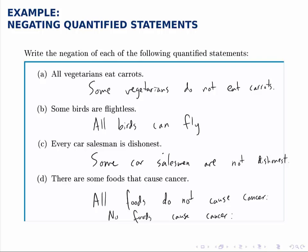So 'all,' 'none,' 'every' — these are universal quantifiers — and 'some' is the existential quantifier.